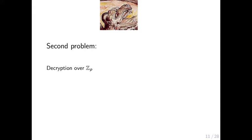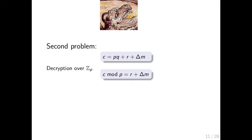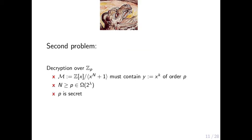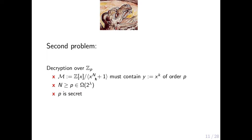Here we have to work modulo p. Given a base scheme ciphertext, we want to reduce c modulo p to get the scaled message plus the noise. This means the GSW scheme's message space has to contain a power of x of order p. For LWE, q is small and public. But in the AGCD case, this implies n is exponentially large in lambda because p is exponentially large in lambda — meaning even adding two polynomials would take exponential time. Also, p is the secret key, so the bootstrapping cannot leak the modulus; but choosing n such that x has order p in the ring would leak information about p.